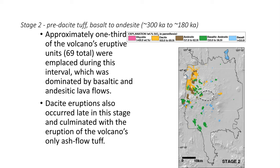Stage 2, between 300,000 and 180,000 years ago, is when about one-third of the volcano's eruptive units were emplaced — the most active time period. This was dominated by basaltic, andesitic, and dacitic lava flows, representing a transition from the highly silicic material of Stage 1. Dacite eruptions occurred late in this stage, culminating with the eruption of the volcano's only ash flow tuff, which is typically more indicative of caldera activity.